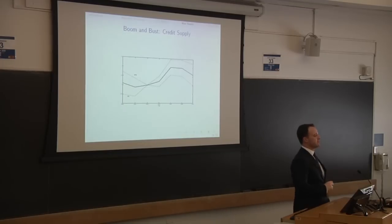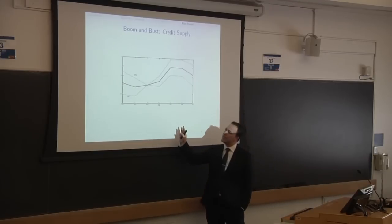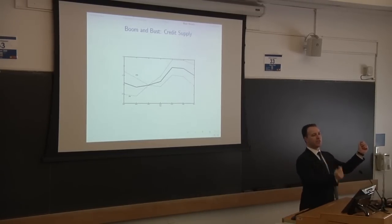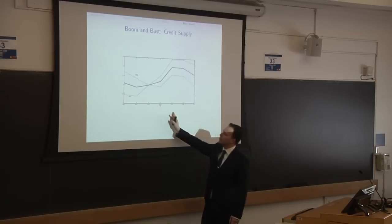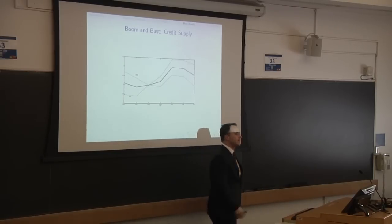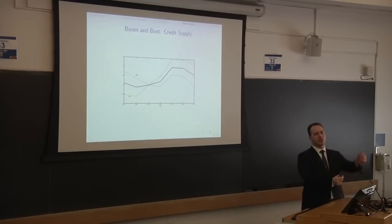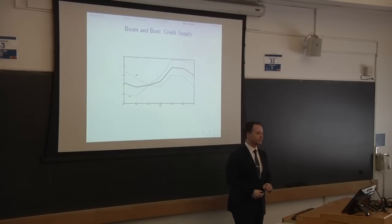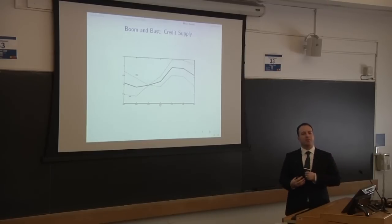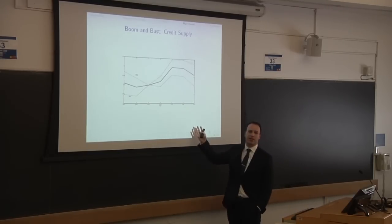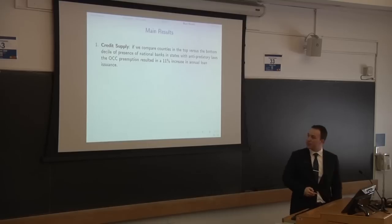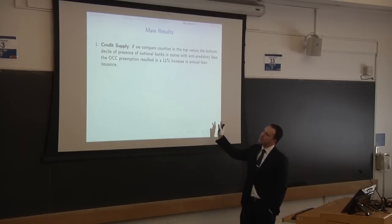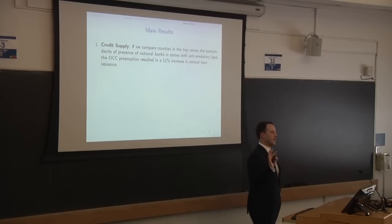Let me show you the first main result. This graph shows the difference in how much credit is given in a county with a high presence of national banks versus a county with a low presence of national banks. There is basically no difference between these two types of counties before 2004. Then, starting in 2004 with this preemption rule, there is a huge increase in the credit given to risky borrowers in states without anti-predatory laws and counties where national banks are very present. If we compare counties in the top versus the bottom — below the median — after 2004 they increased their credit supply by 11% every year.